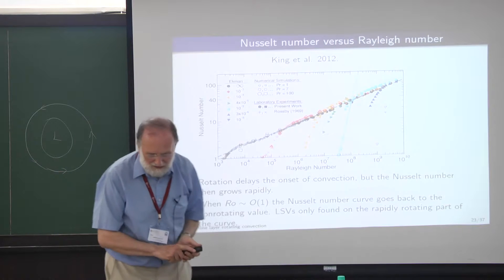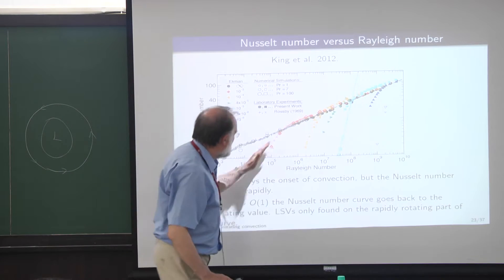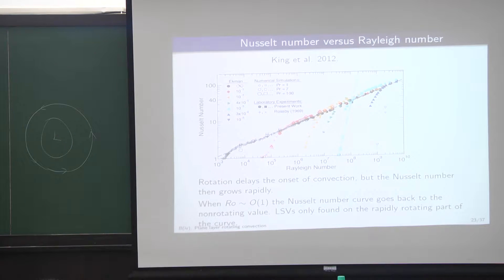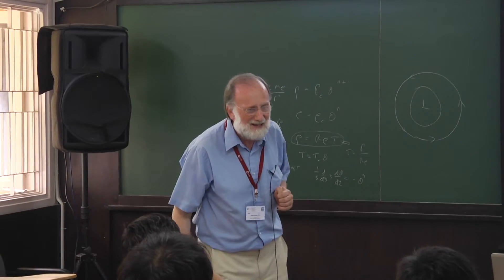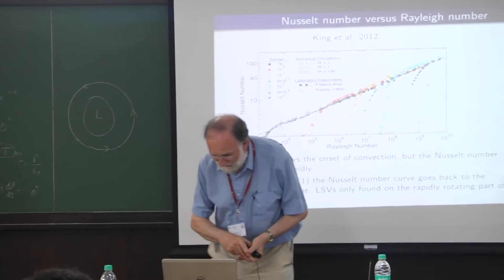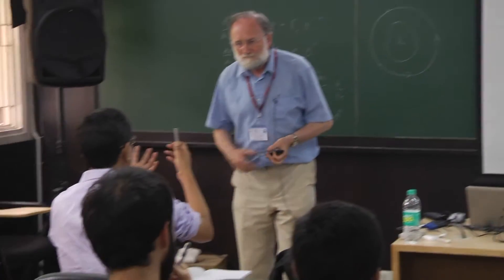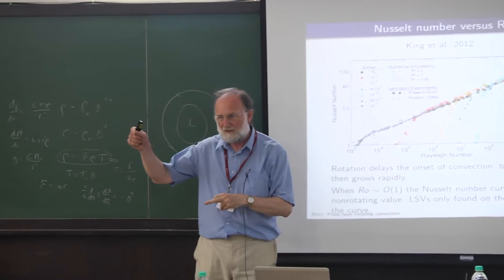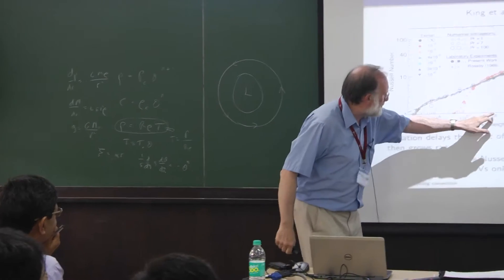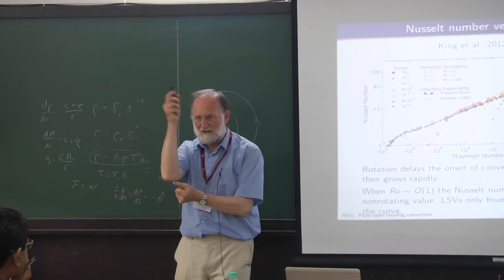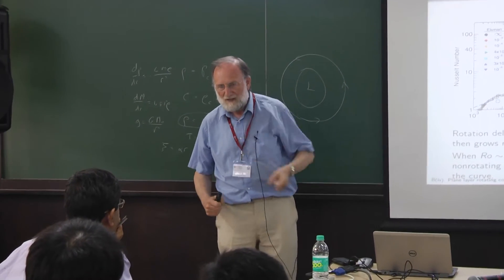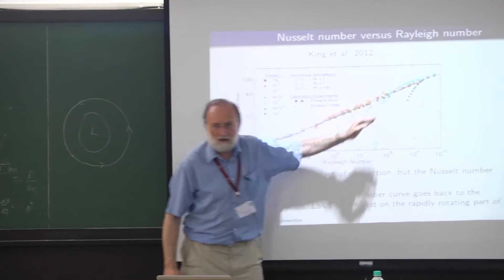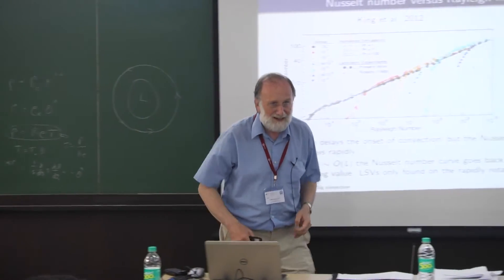It would be nice to predict these slopes — that's a job for you. Rotation suppresses convection, which is why you need a higher Rayleigh number before anything happens. But once the columns get operational they transport heat quite quickly, which is why these rotating gradients are steeper than the non-rotating one.